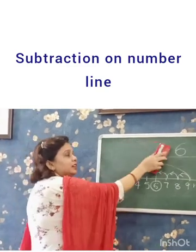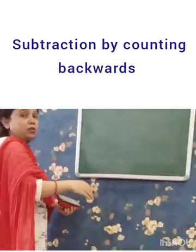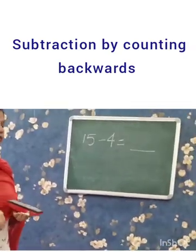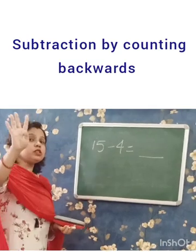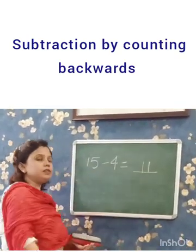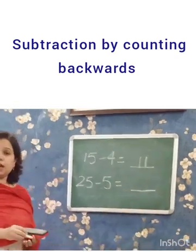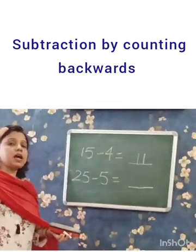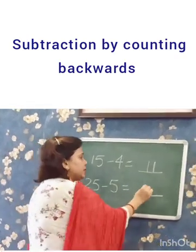In addition we count forward and add; in subtraction we count backward and subtract. Suppose it is 15 minus 4 — we will subtract by counting backward. Take out 4 fingers: 15, 14, 13, 12, 11. So 11 is the difference. 25 minus 5 — count backward and subtract, take out 5 fingers: 25, 24, 23, 22, 21, 20. So the answer is 20.